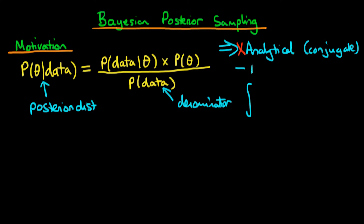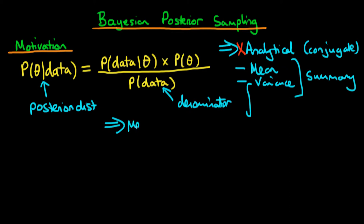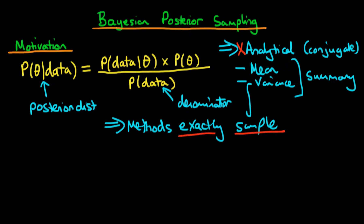It turns out that we may not need to exactly know the specific form of the posterior distribution. What we can get away with are perhaps summary measures of that distribution — if we were to know the mean, perhaps the variance, and perhaps any other summary, that might be sufficient to do Bayesian inference and prediction. Luckily, even if we cannot analytically construct the posterior distribution, it is possible to construct methods which nonetheless do exactly sample from it. We're going to talk about exactly what we mean by 'exactly' and 'sample' in the context of a posterior distribution.